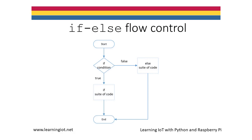This flowchart represents an if-else statement. If the condition tested is true, then the if suite is executed and the else clause is skipped. If the condition tested is false, then the if suite is skipped and the else clause is executed.